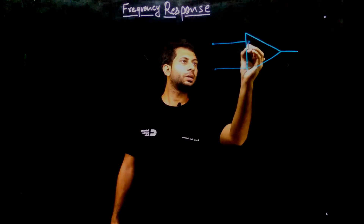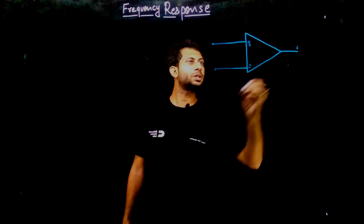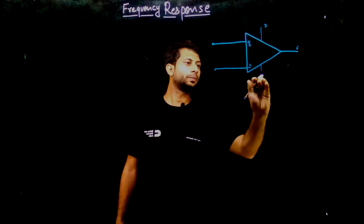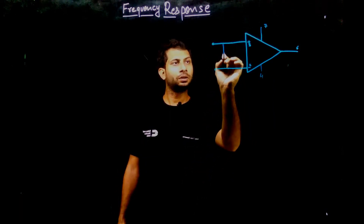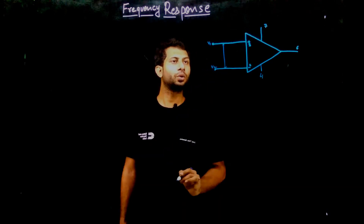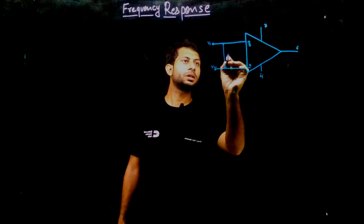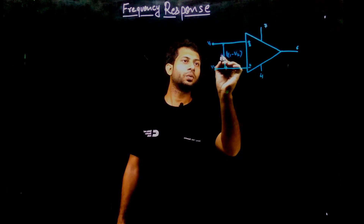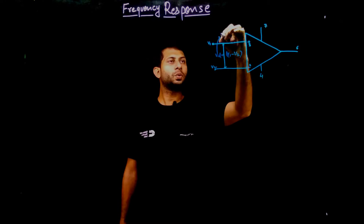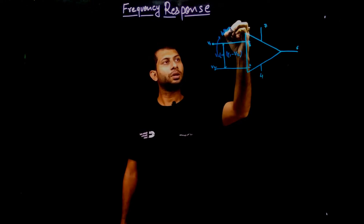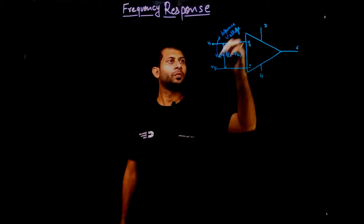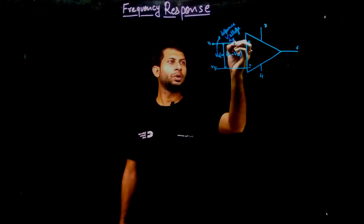For this op-amp we have pin number three and pin number two as inputs, and pin number six as the output. Pin number seven and pin number four are the supply pins. We take the two voltages V1 and V2, and the difference between these two voltages is treated as V1 minus V2, which is equal to Vd — the difference voltage at the input.